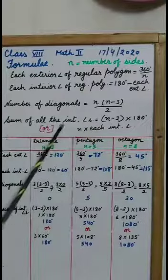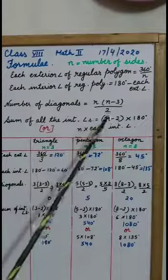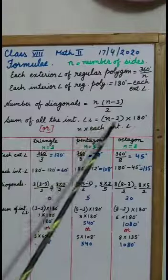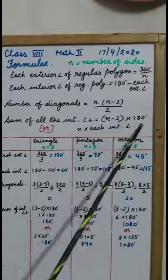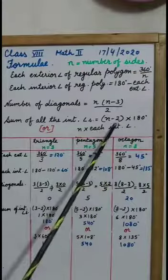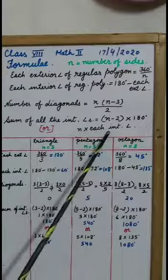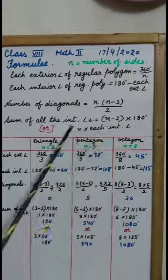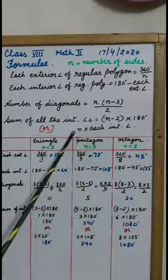Sum of all the interior angles. Sum of all the interior angles we can find by 2 formulae. That is n minus 2 into 180 degrees. Number of sides minus 2 into 180 degrees. Or, if we know each interior angle of a regular polygon, then we can find by multiplying each interior angle by n.